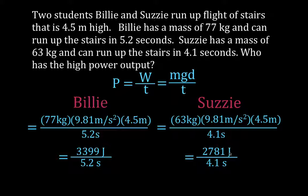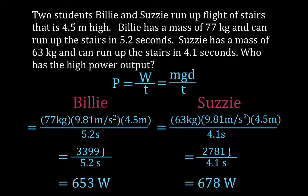But power is how fast you do your work, and you can see Susie does her work faster. Now we divide work by time. Billy's power output is 653 watts. Susie, even though she does less work because she has less mass, does it quicker, and therefore her power output is 678 watts — she has a higher power output. Billy does more work, but Susie does her work quicker, and therefore her power output is greater than Billy's.